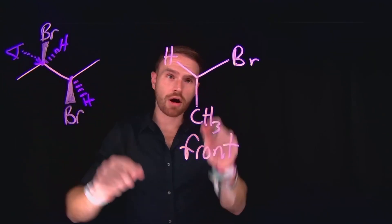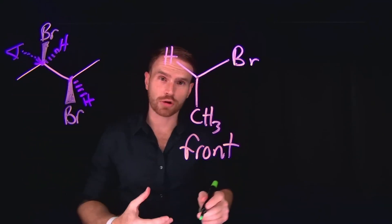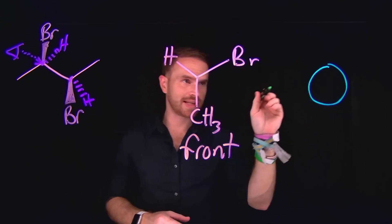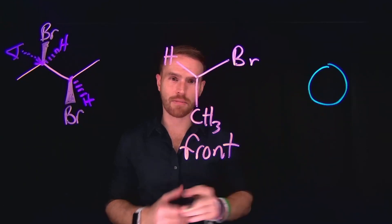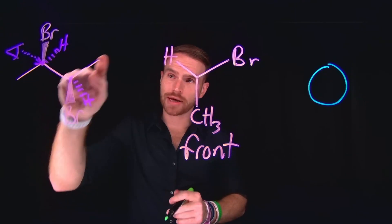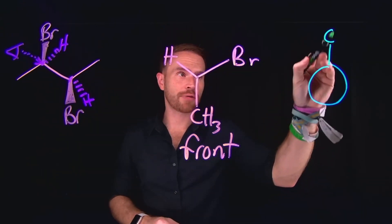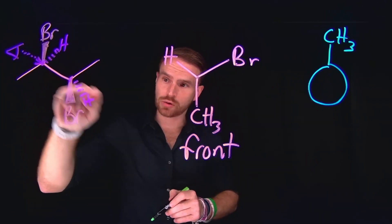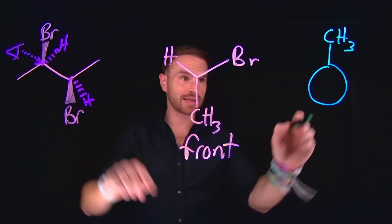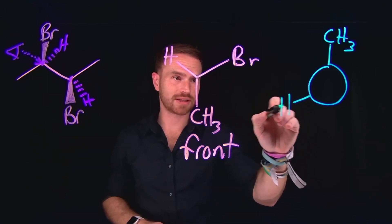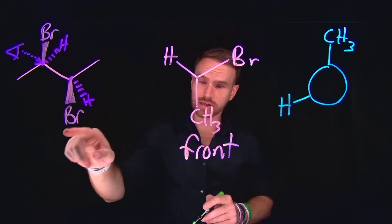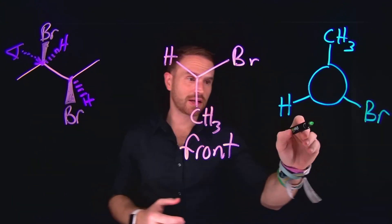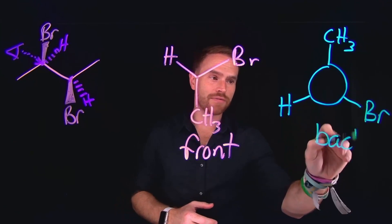If you were to look down this bond, what you would see is that going downwards is our methyl group, that CH3. From this position, the bromine is coming out of the screen, which means it's going to the right-hand side, and the hydrogen atom must be going to the left-hand side. This is the front of the molecule — we've taken it and turned it facing you where you're looking down this bond, and since you're looking down this bond, that bond is invisibly going into the screen, giving you a clear visual sight of the front of the molecule.